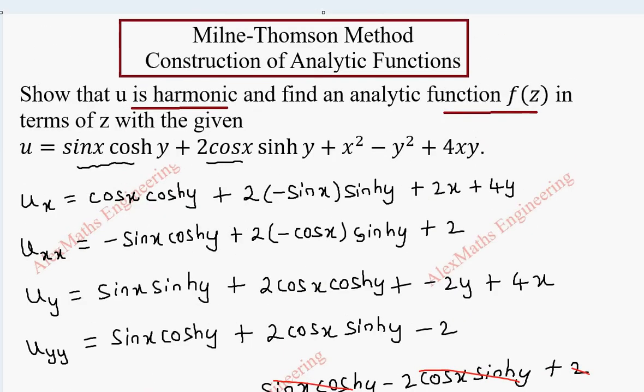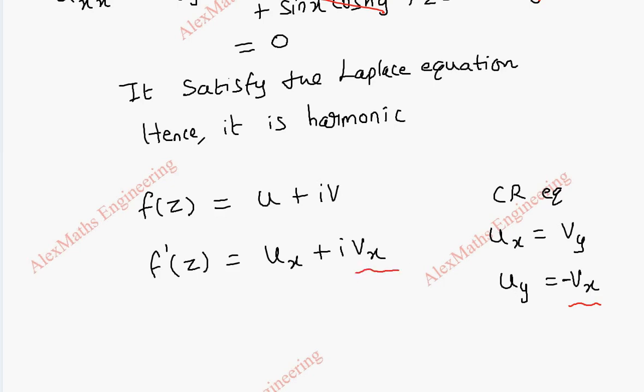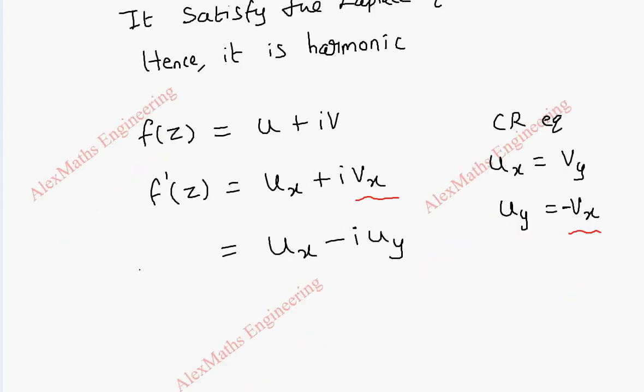Now, coming to the next part, you have to find f of z. So, f of z is u plus iv and f dash of z is u_x plus iv_x. From CR equations, we get u_x equal to v_y and u_y equal to minus v_x. Since we have u given in our question, we change this v_x as minus u_y. So this becomes u_x minus i u_y and this is our f dash of z. Using Milne-Thomson method,